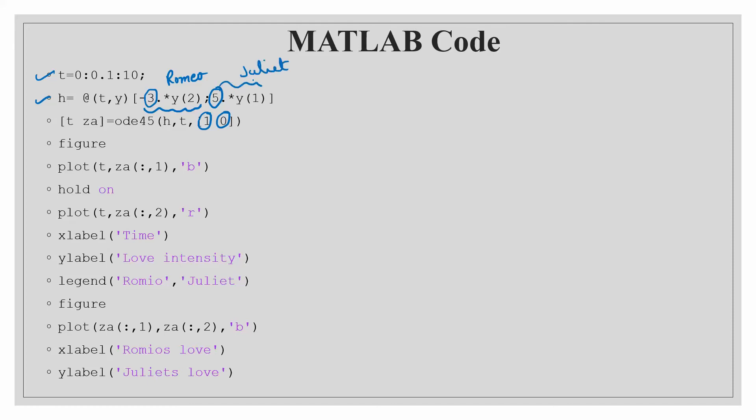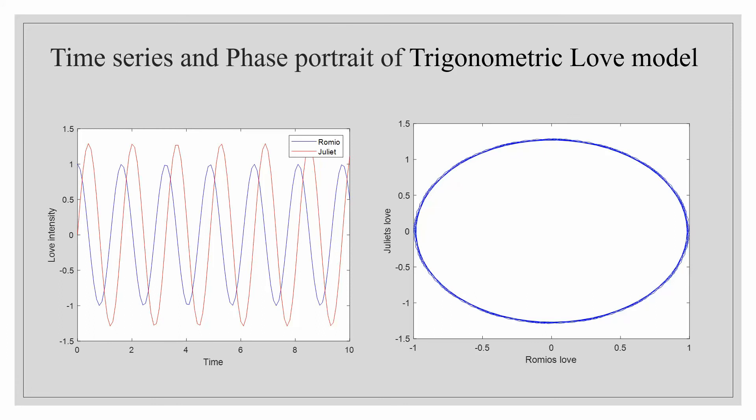Now if this simple differential equation is solved using this ODE45 inbuilt function we can see that we will get these two graphs. Now what does this graph tell you? Again you can see the graph between the love intensity and time.